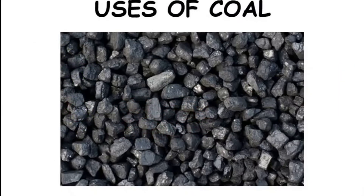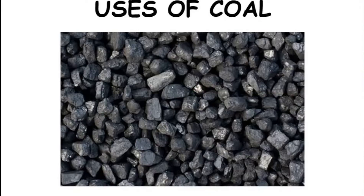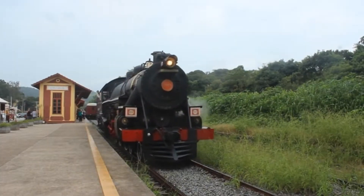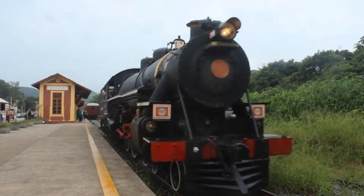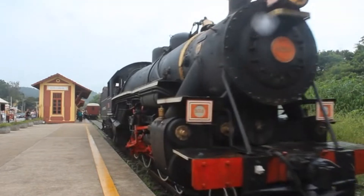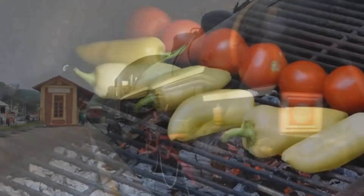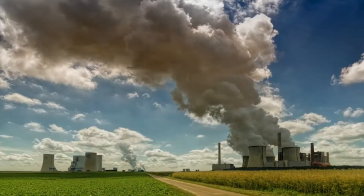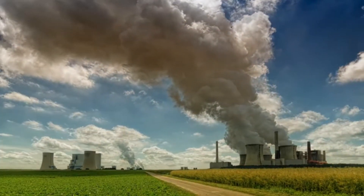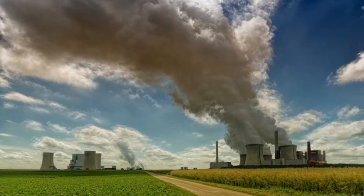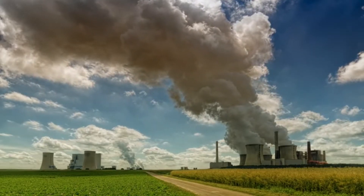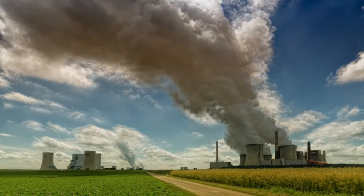Uses of Coal. Coal was used to produce steam in railway engines initially. It is used to cook food, generate electricity in thermal plants and used as an industrial fuel.